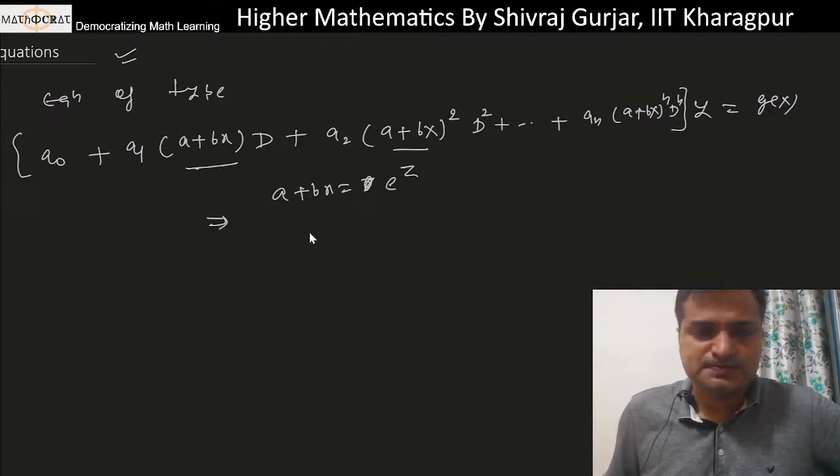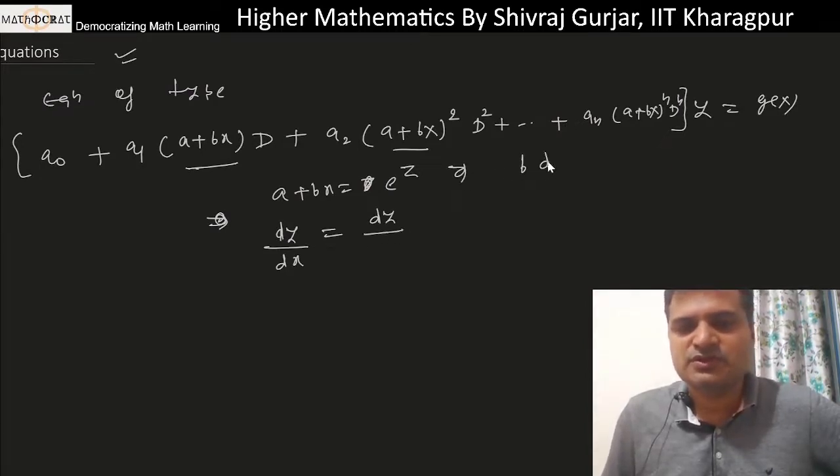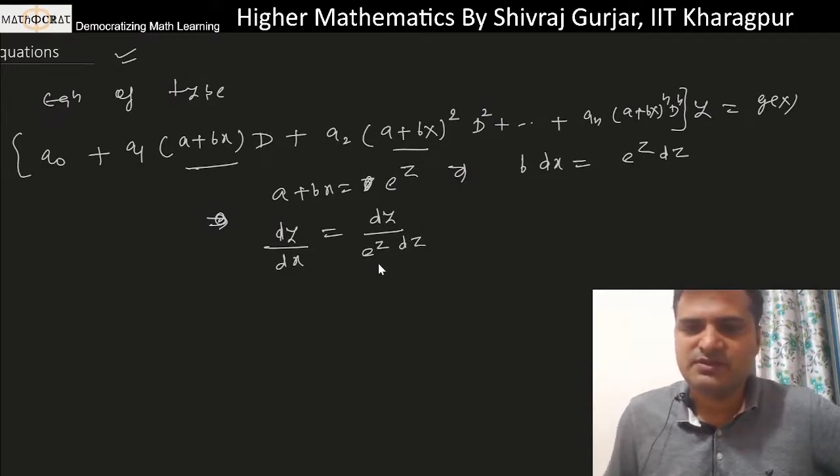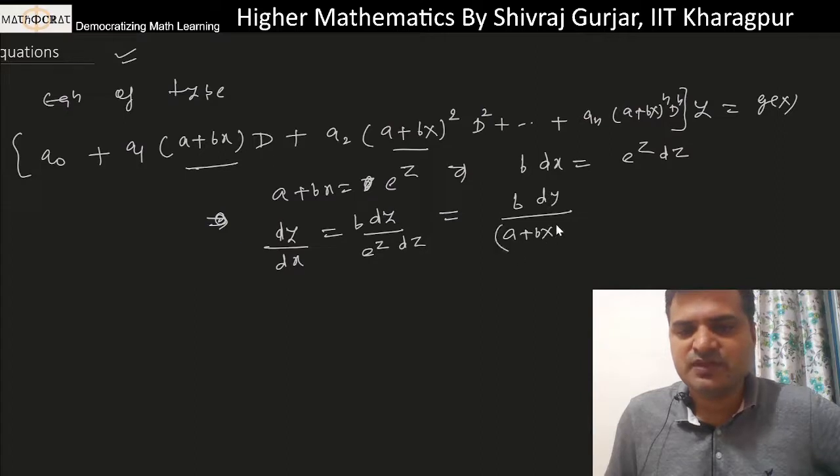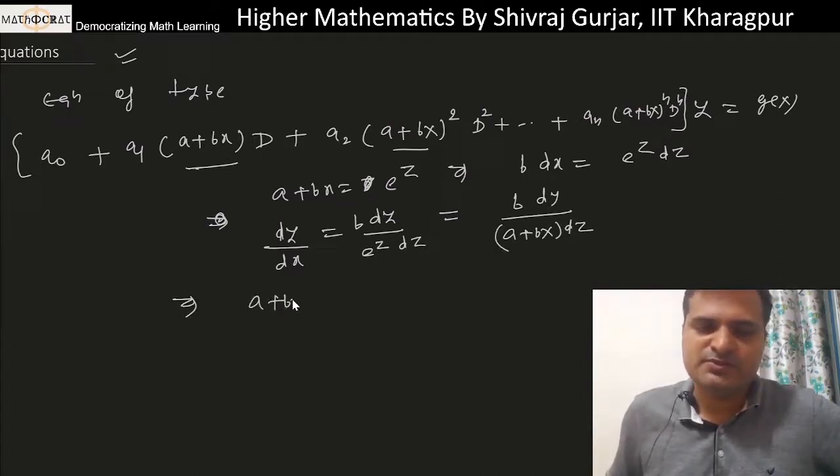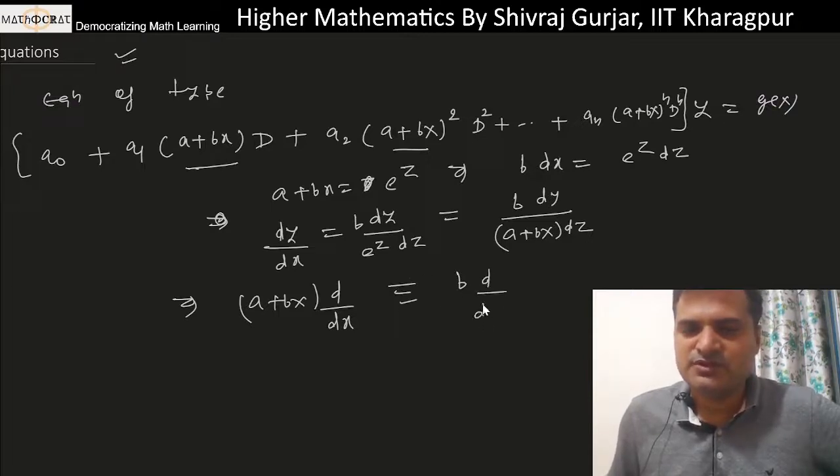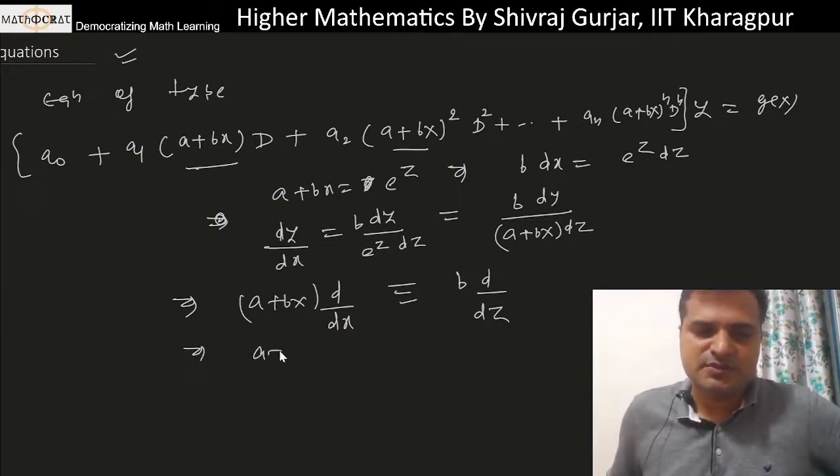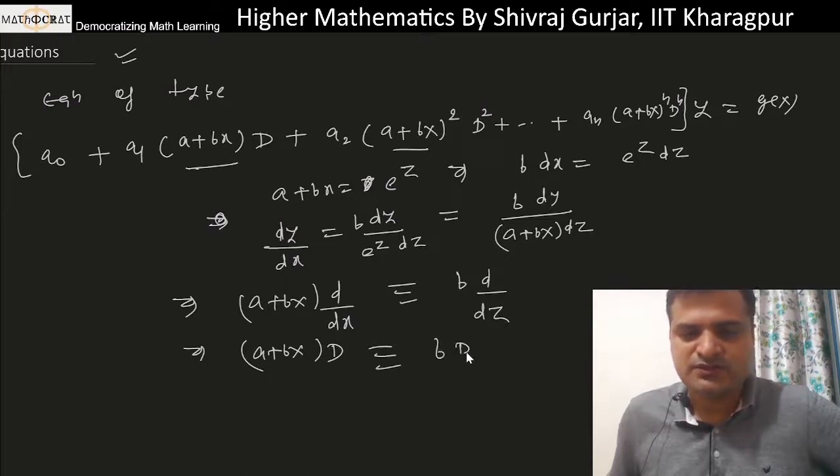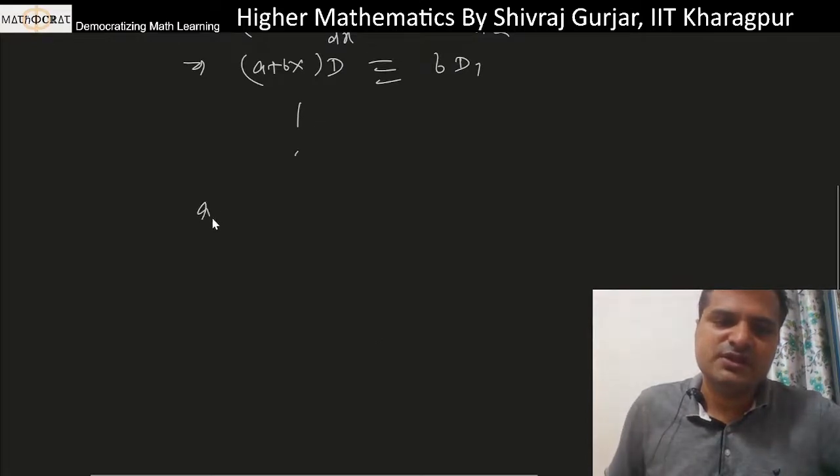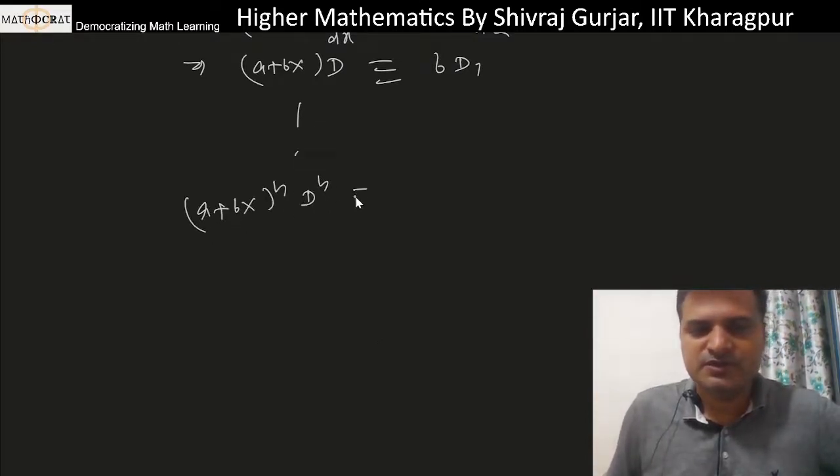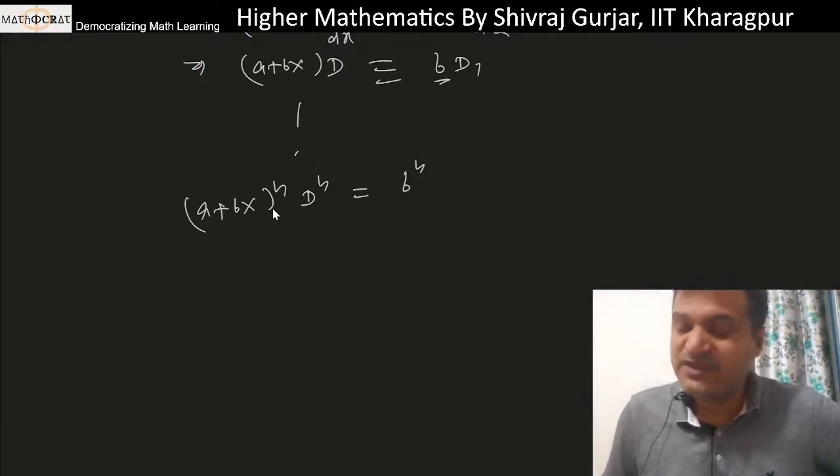If we put x as e^z, then what happens to dy/dx? dy/dx, differentiate both sides: e^z dz, dx can be replaced by e^z dz. Divide by b, so b goes to the numerator: b dy/e^z, e^z is nothing but a+bx and dz. We can multiply by a+bx both sides, so (a+bx)d/dx of y is equivalent to b d/dz.